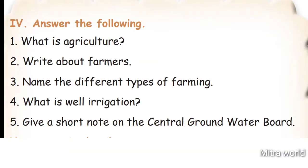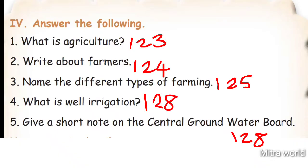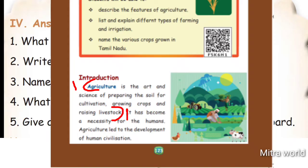Answer the following. Question 1: What is agriculture? Take page number 123. Agriculture is the art and science of preparing the soil for cultivation, growing crops and raising livestock.